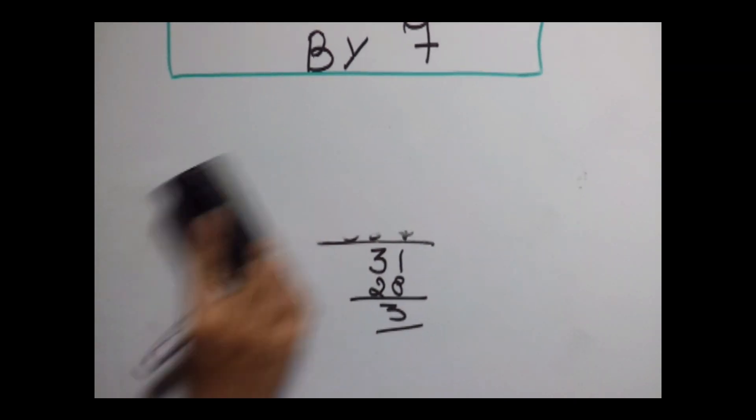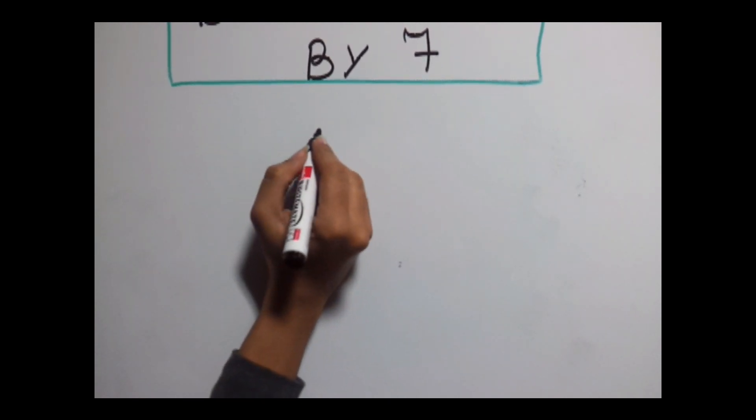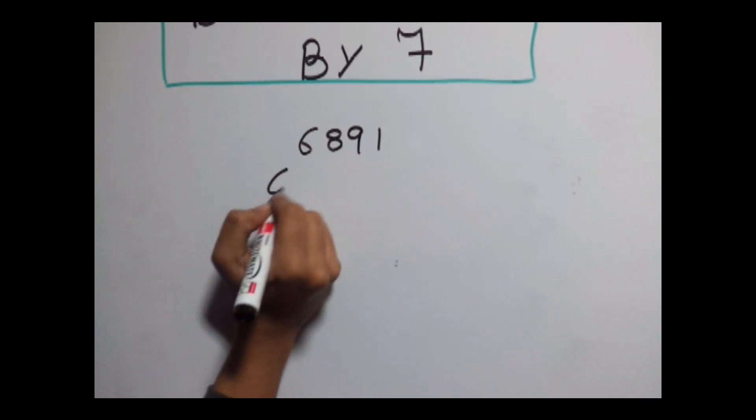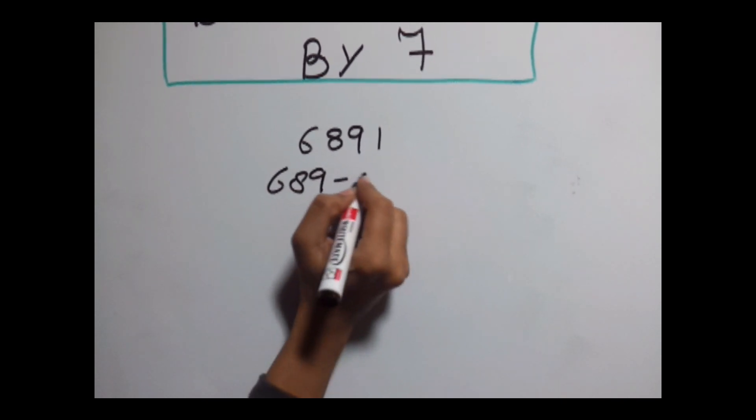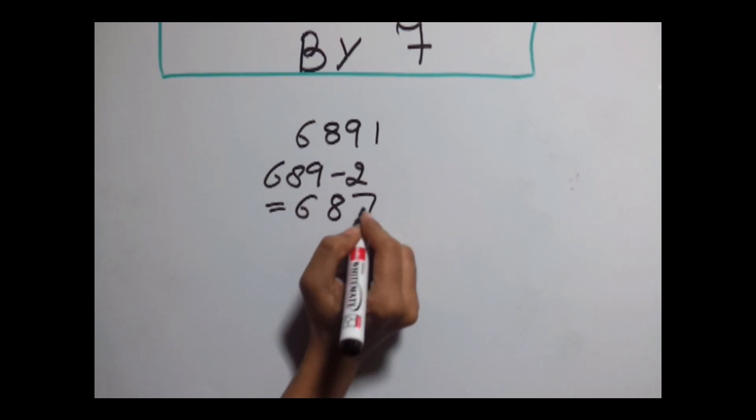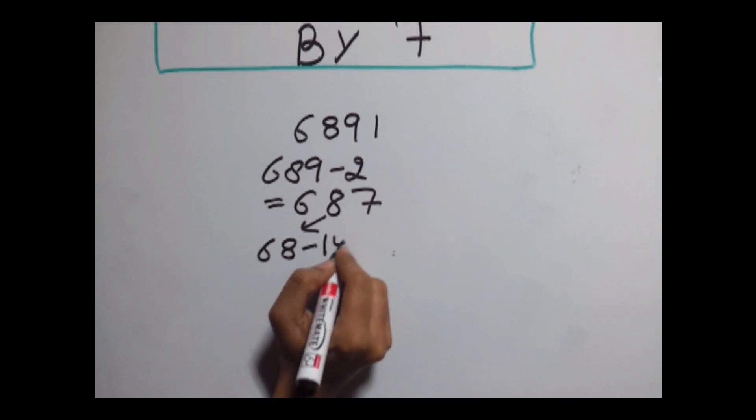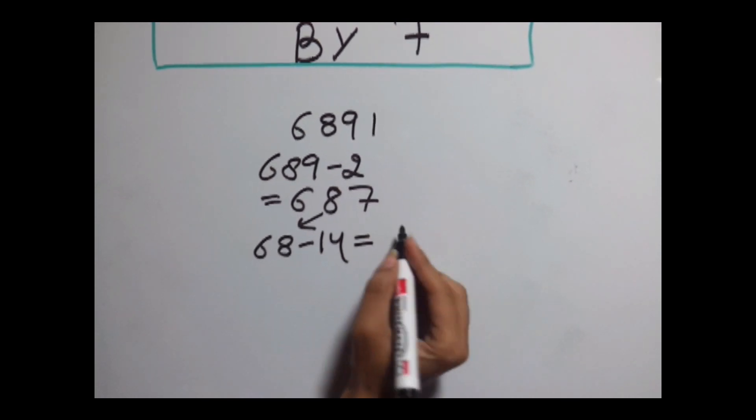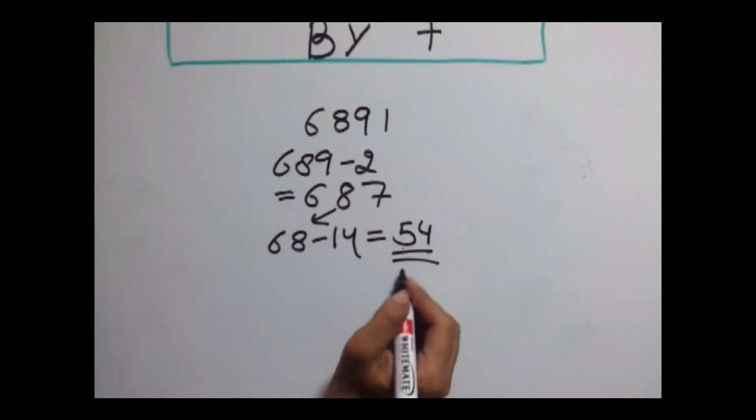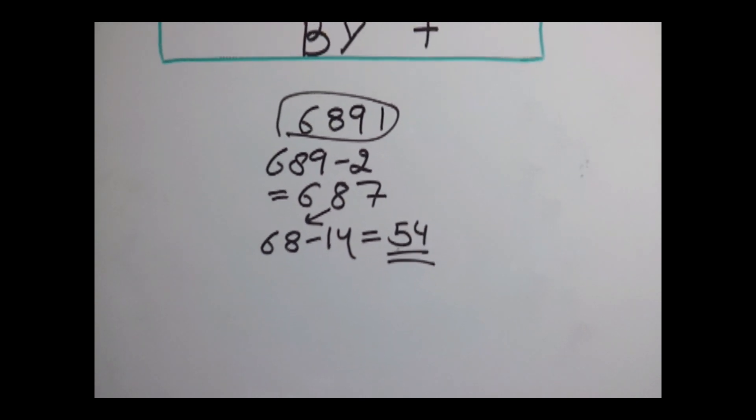Now let me show you how we can quickly do it. Our number is 6891. We would do it quickly in a simple way. That gives us 687. Again repeating it gives us 68, 8 minus 14 which gives us 54 as the answer. 54 is not divisible by 7, so this number is not divisible by 7. In a few seconds I have solved it.